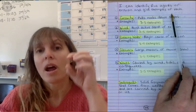So I can identify five agents of erosion and give examples of each. Remember erosion actually moves materials, right? Weathering breaks it down, erosion moves it, takes it to another place.